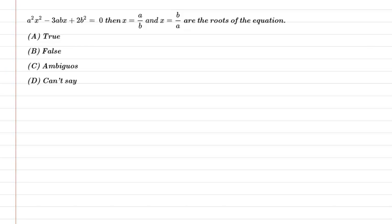Hello students, first of all let us understand the question. The question is: a²x² - 3abx + 2b² = 0, then x = a/b and x = b/a are the roots of the equation.